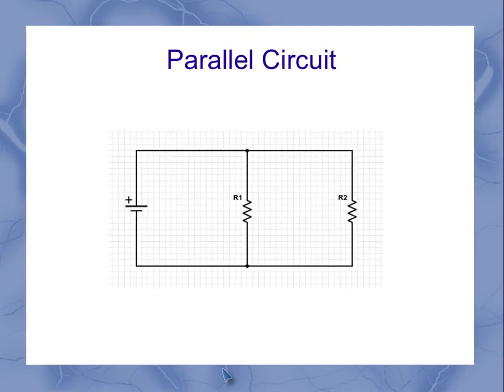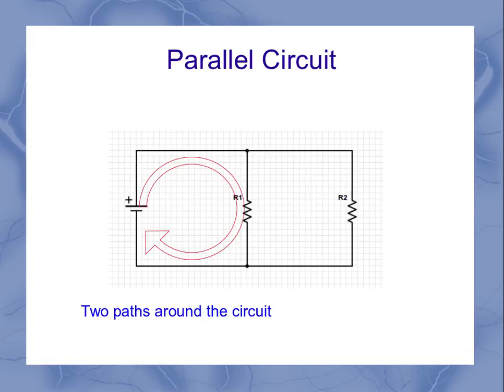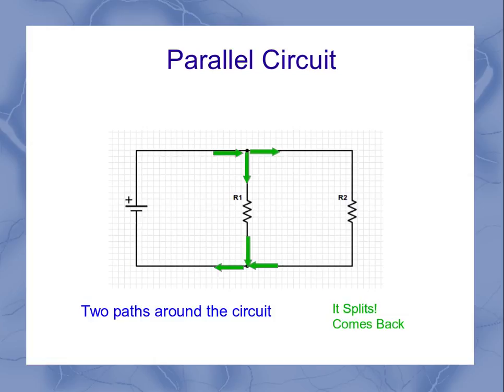Now we can talk about a parallel circuit. Parallel means there's two paths around the circuit. In this case, one path goes through resistor one, the other path goes through resistor two. I could also think of this in terms of the path splitting and going two different directions and then coming back together.